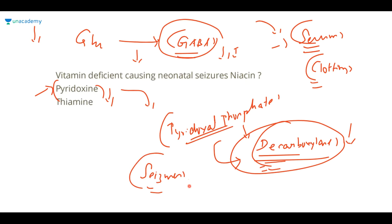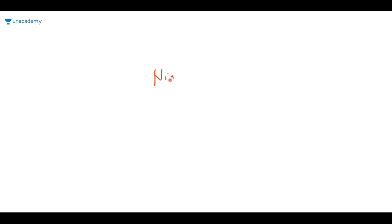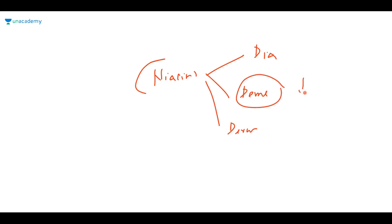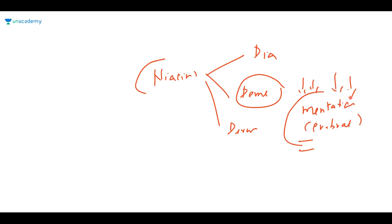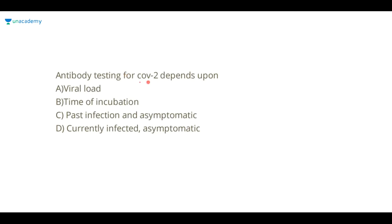In pellagra, you have niacin deficiency causing the three Ds: diarrhea, dementia, and dermatitis. Dementia suppresses cerebral activity and higher thought processes — it does not cause excess activation, so pellagra is not the cause of seizures. Beriberi is known to cause CNS beriberi as encephalopathy or psychosis, not seizures.